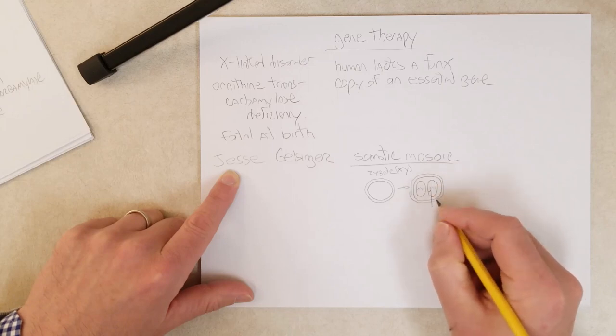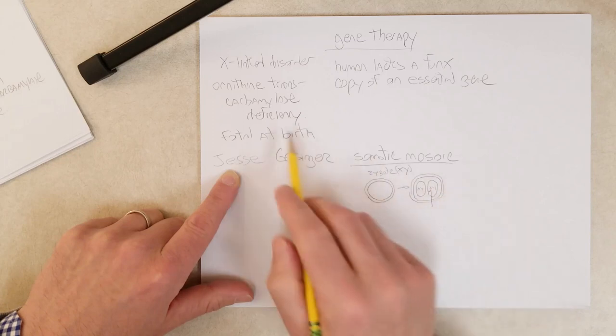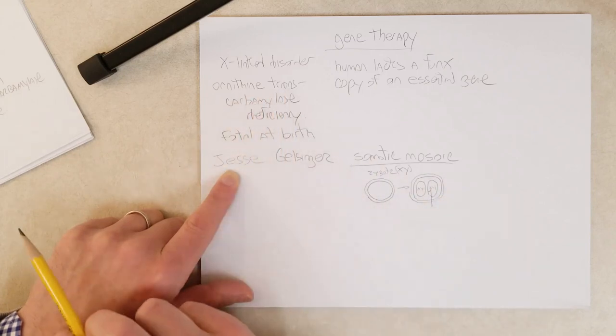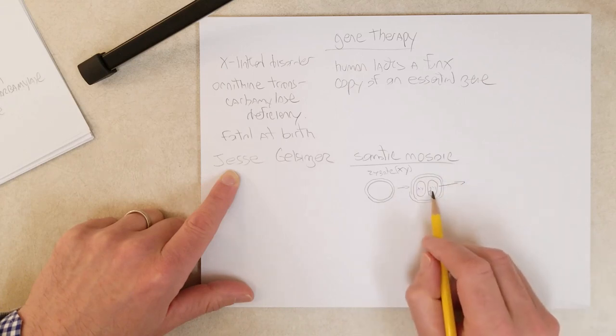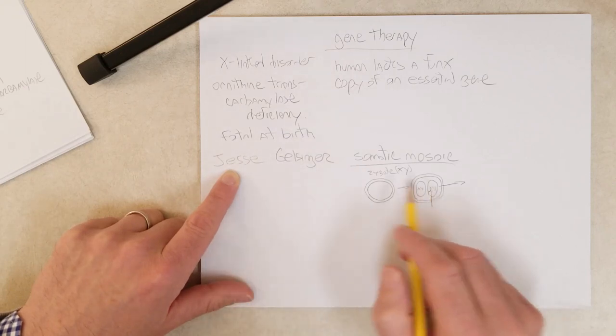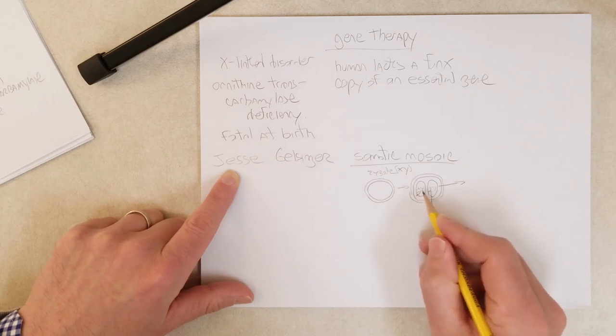Well, what if this X right here is mutated, develops a mutation in the gene for ornithine transcarbamylase? Well, every cell that results from division of this cell, every daughter cell from this, every descendant of this cell would have a mutation in that ornithine transcarbamylase gene. But every cell that comes from this one would not.